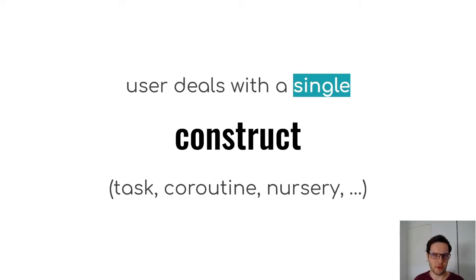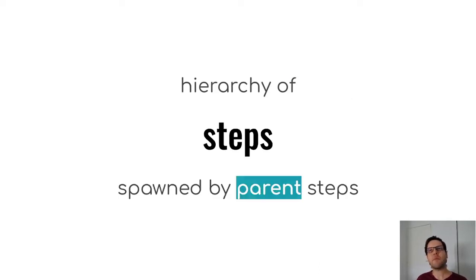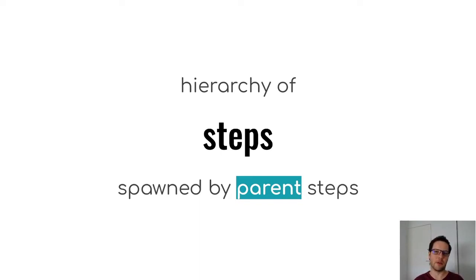In Trio, that single object would be the nursery. In Swift, it would be the task. In Kotlin, it would be the coroutine. So you simplify things by dealing with a single object, and this single object represents a hierarchy of steps that are spawned by the parent. You could have a deep hierarchy where your single construct represents the whole process, divided into several steps.